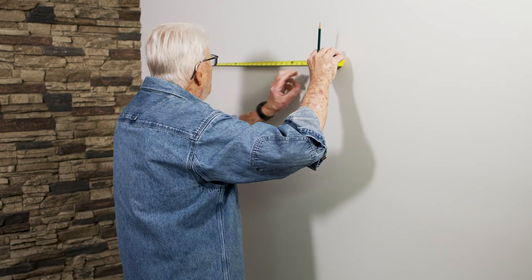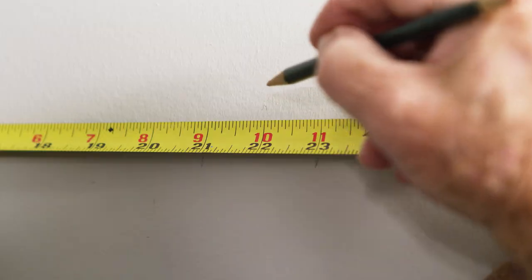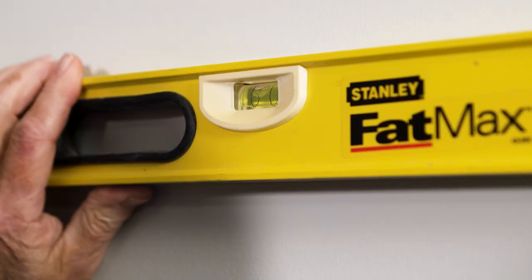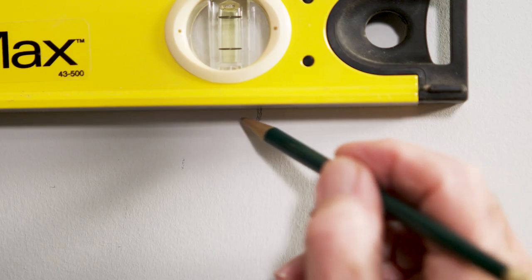Using a tape measure, I mark the location for the second bracket. In this case, 22 inches to the right. Then, using a two-foot level, I mark the height for the second bracket.